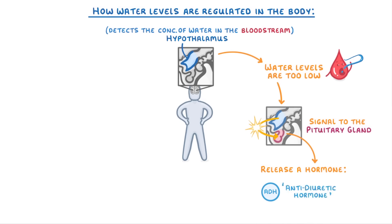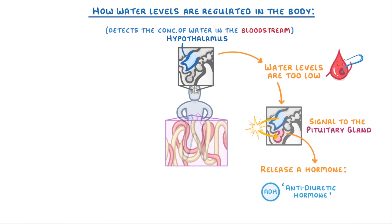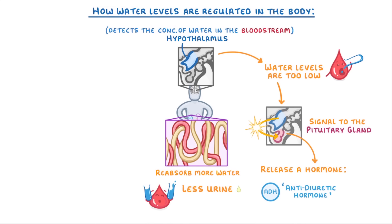And as the ADH travels around the body, it reaches the kidneys and tells the tubules to reabsorb more water into the blood, meaning that the amount of water in the bloodstream increases. And as a result, we produce less urine. So basically, if we have too little water, we produce more ADH, which tells the kidneys to reabsorb more of the water, and so we produce less urine.